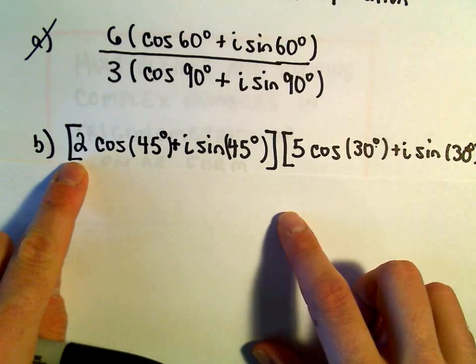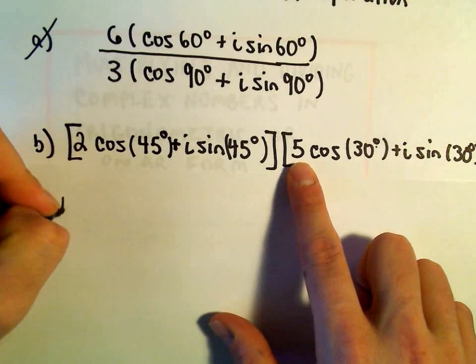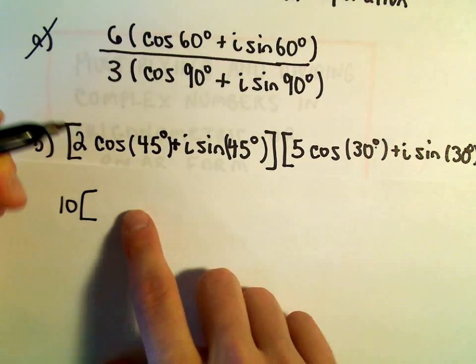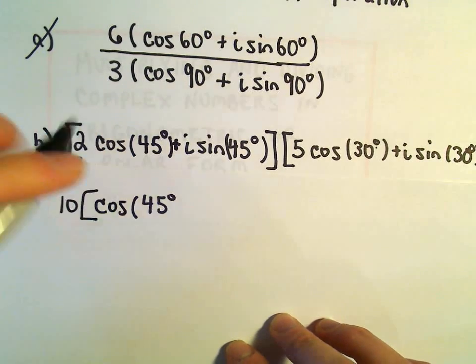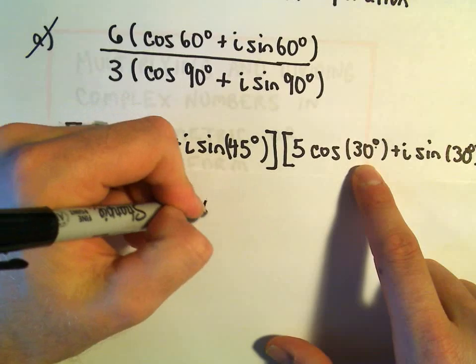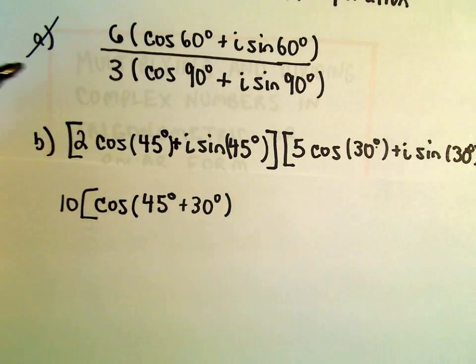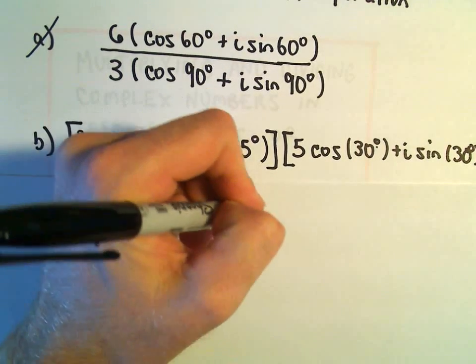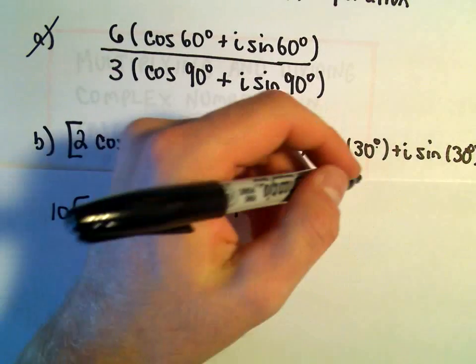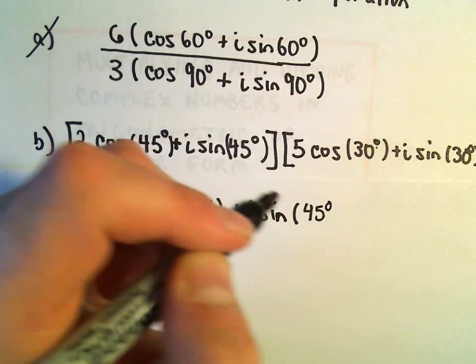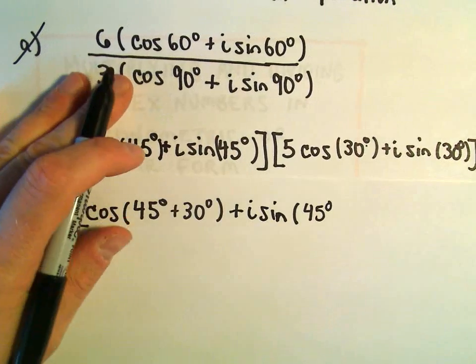So in this case, we'll simply take our 2 times our 5, which will give us 10, and then in our parentheses, we would have cosine of 45 degrees, and then I would have to add the angle 30 degrees, and then we just do our plus i sine of, we do the same thing. We just take 45 degrees and add to that the value of 30 degrees here.